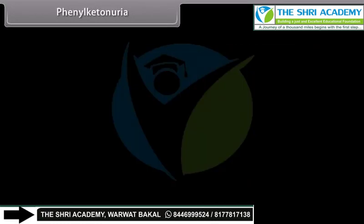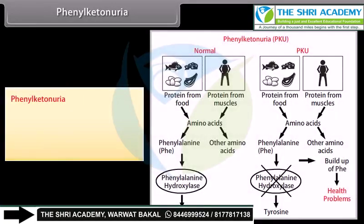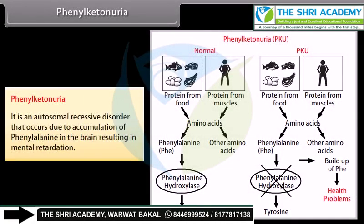Phenylketonuria: It is an autosomal recessive disorder that occurs due to accumulation of phenylalanine in the brain, resulting in mental retardation.